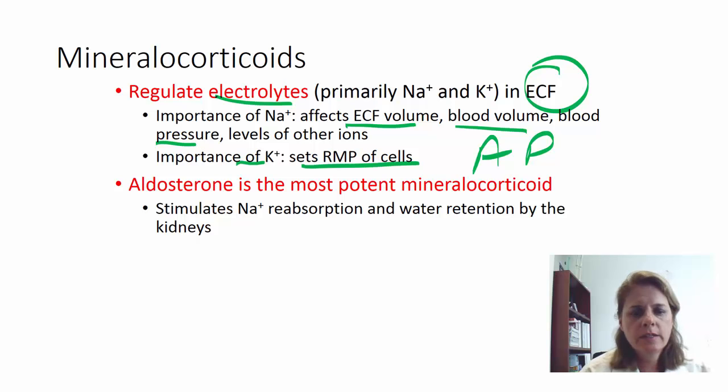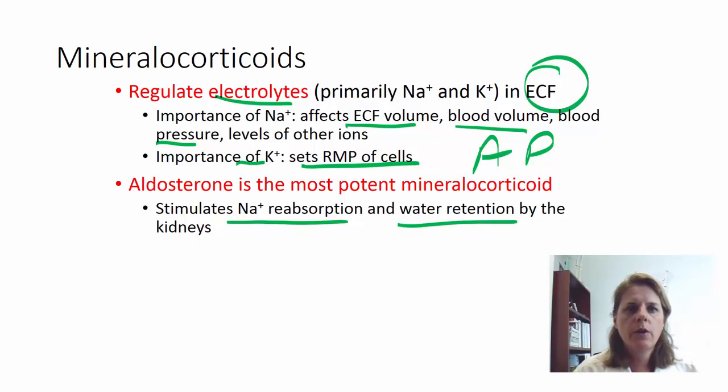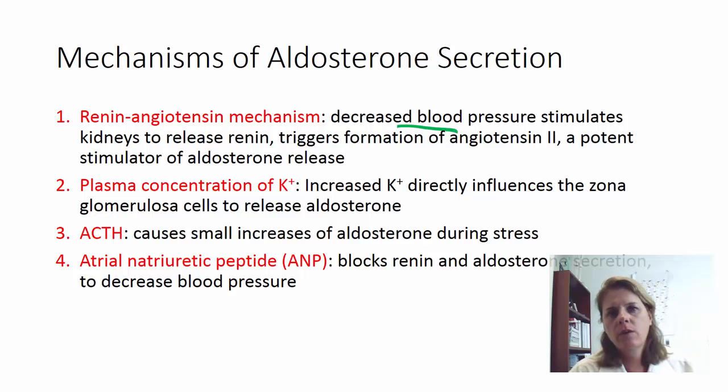Aldosterone is the most important mineralocorticoid. It stimulates sodium reabsorption in the kidneys, and because water follows sodium, you retain water. So aldosterone's target is the kidneys — reabsorb sodium and hold on to water. Aldosterone secretion is regulated by the renin-angiotensin system. If blood pressure is falling, the kidneys release renin, which triggers the formation of angiotensin 2.